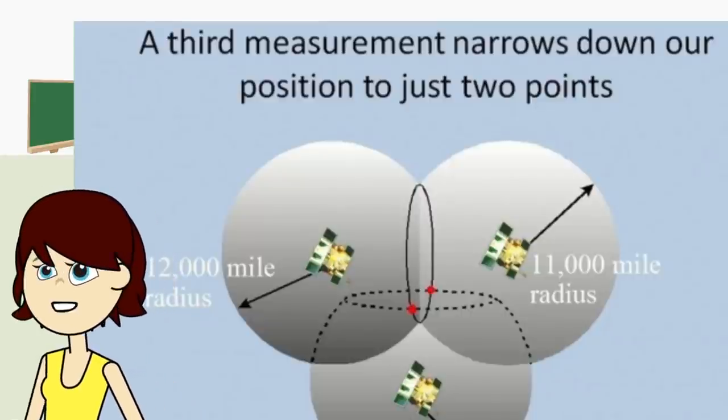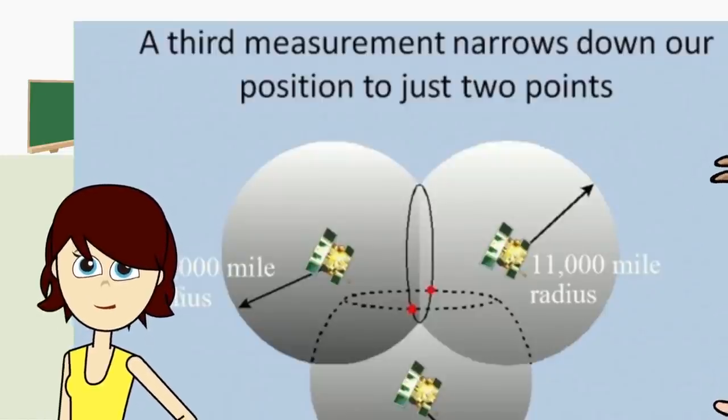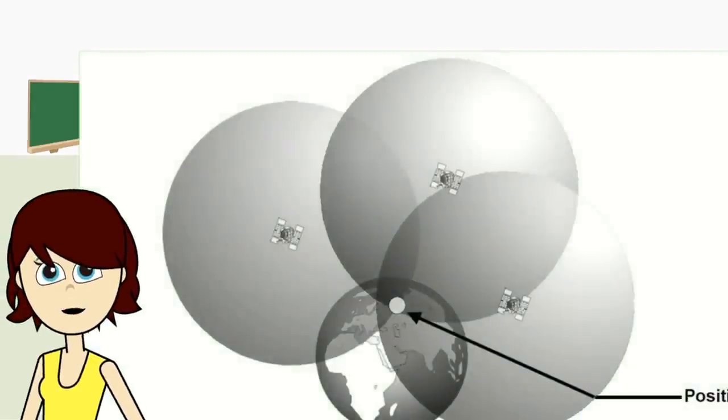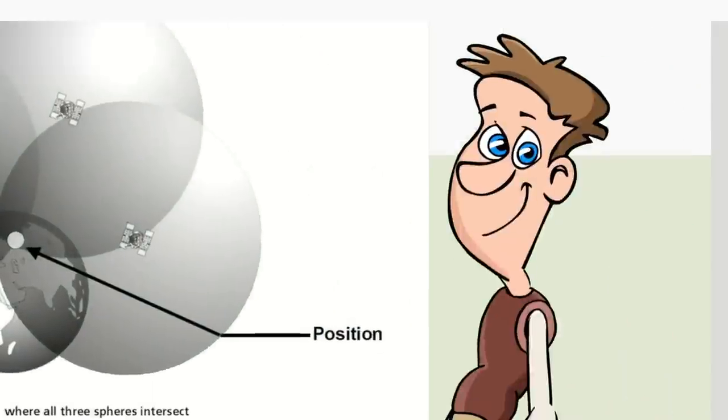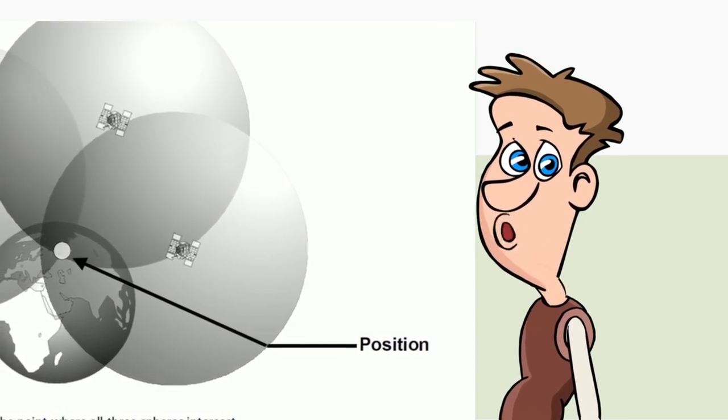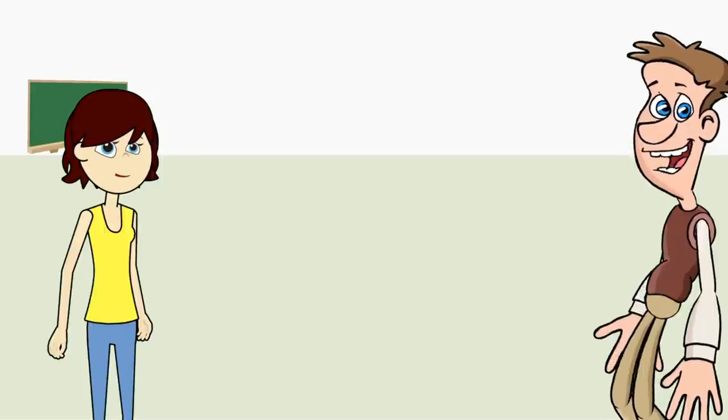When you have three balls intersecting, that means you're somewhere along two points that could possibly be your location. Now how do you narrow that down? Pretty simple. It's the location that's on the earth because the other one is in space, and we all know there's no air in space. That would make it really hard to breathe. I am, that is a terrible joke. You are so corny.